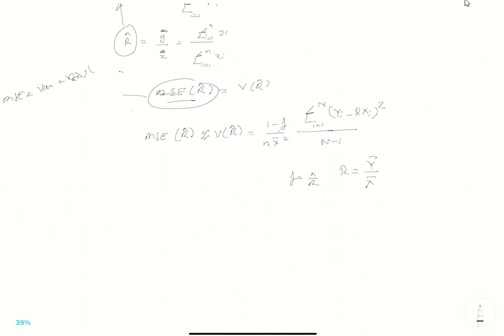Then it will become 1 minus f upon under root n x bar which is the standard error. So standard error is just going to be the under root of it. Standard error of the r hat is going to be this. And then this whole thing also gets in the under root. And then you do this and then you do the yi minus r hat xi times xi upon n minus 1.